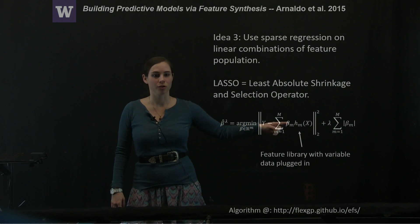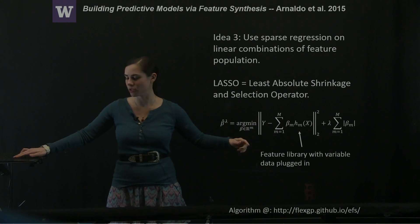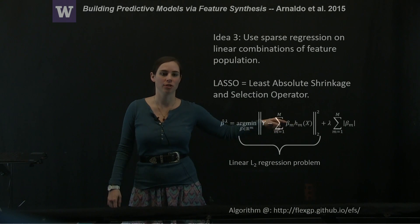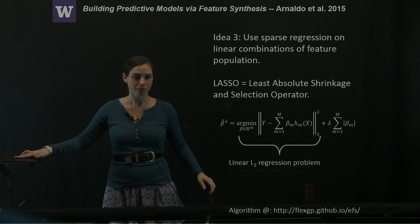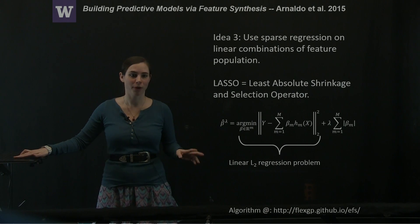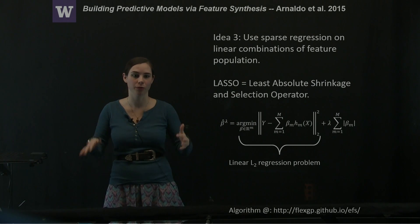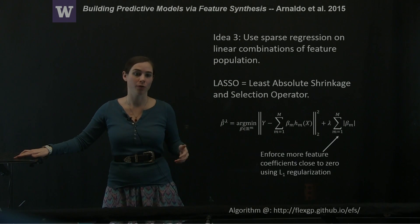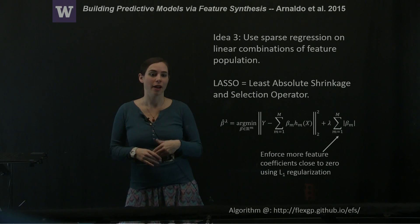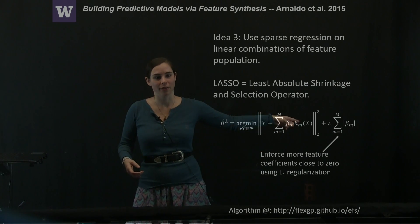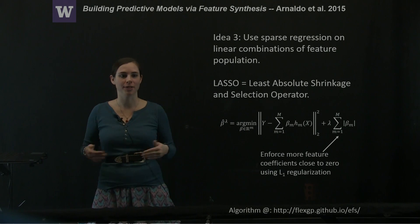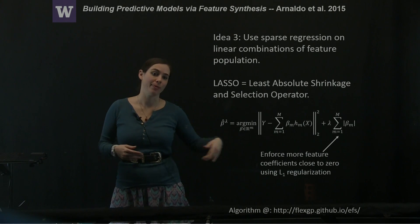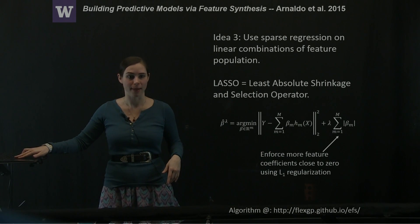What you're trying to determine is what essentially is an L2 regression problem to determine these beta coefficients. In order to impose sparsity, meaning to have a lot of these beta values go to zero so that you're not keeping every single term but only the important ones, LASSO also has an L1 regularization term, which as the parameter lambda gets larger and larger, more and more of the beta values are going to go to zero because it's using an L1 type norm on those beta values.